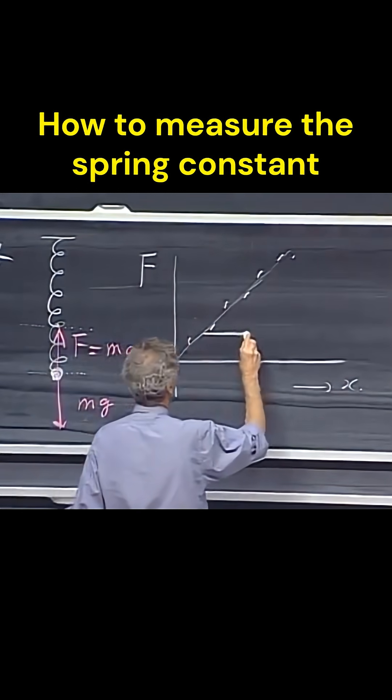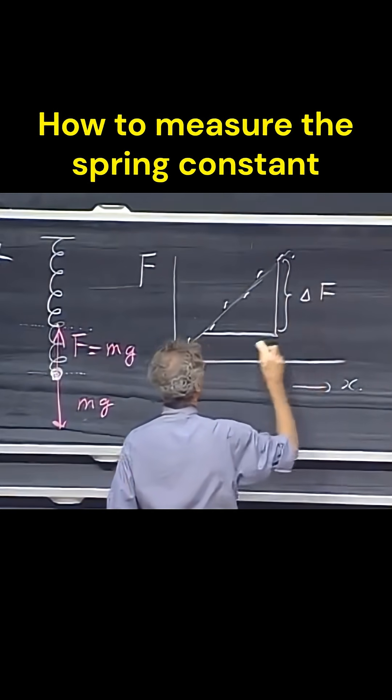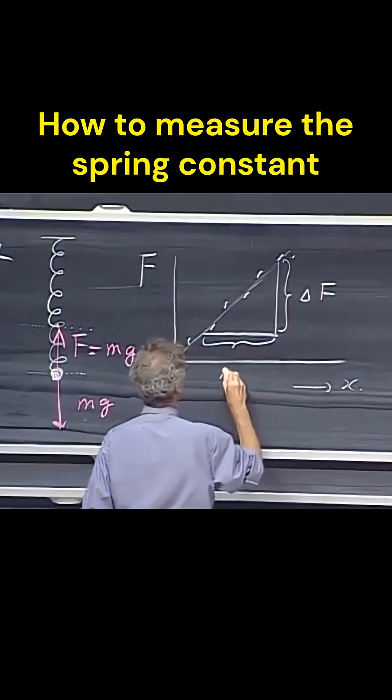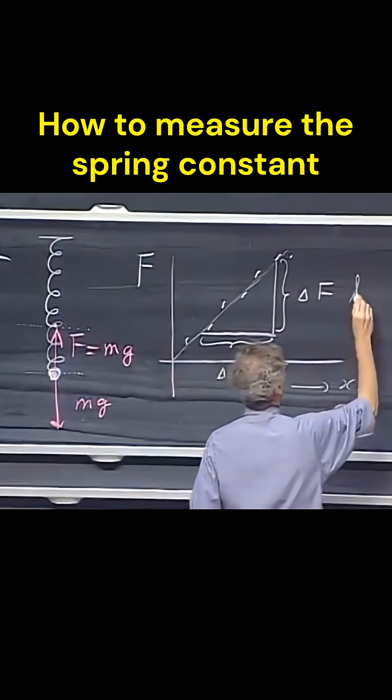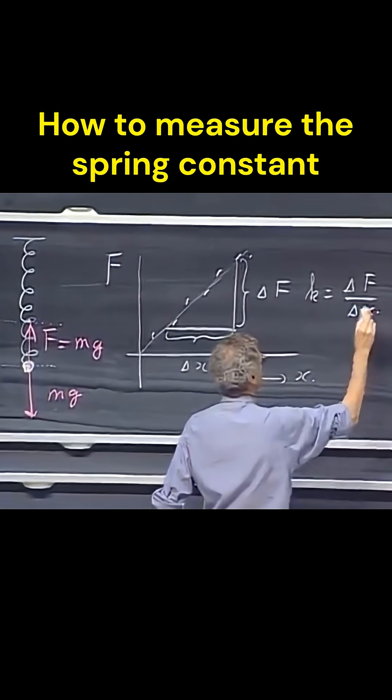And the spring constant follows then if you call this delta f and you call this delta x, then the spring constant k is delta f divided by delta x.